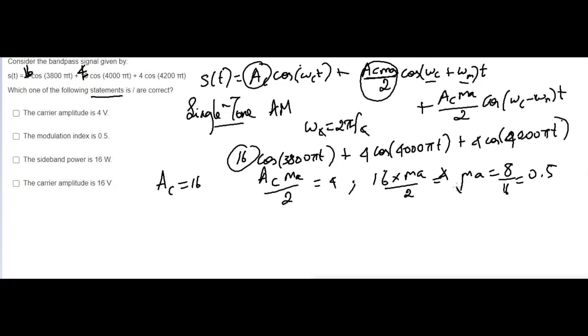So ma means modulation index. Now automatically you know, so it is the right. Carrier amplitude is 4V? It's not, because carrier amplitude is 16V. So this is not right, it's like a multiple choice question.